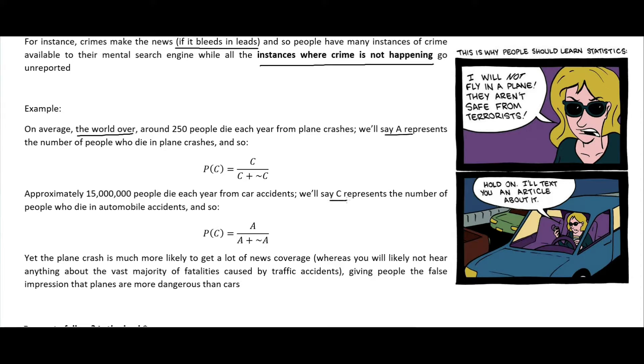We'll say that C here is the number of plane crashes and tilde C is the number of not plane crashes. Approximately 15 million people die each year from car accidents. A is the amount of automobile accidents and tilde A is people who drive and don't get into car accidents. Yet a plane crash is much more likely to get a lot of news coverage.